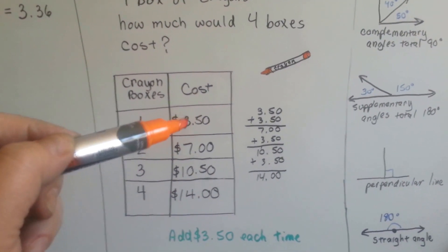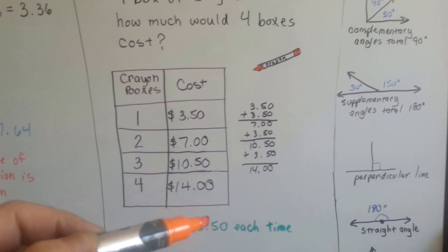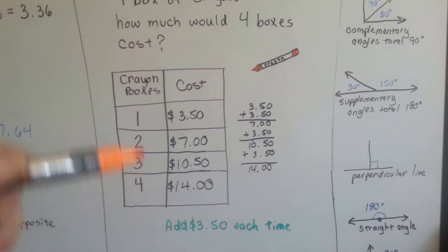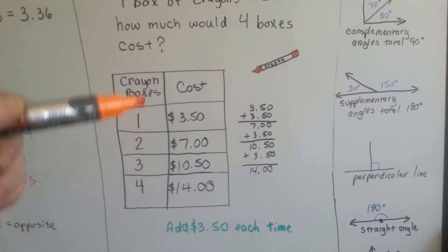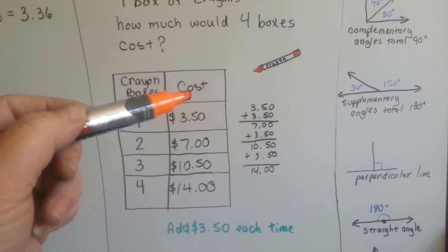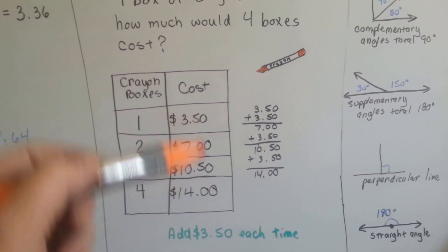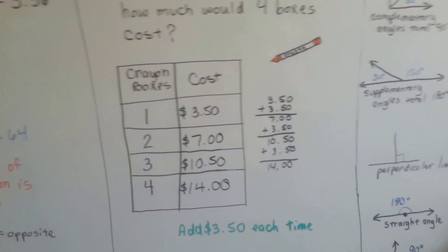We could keep adding $3.50 and make a table to show that four boxes would be $14. We would increase by $3.50 each time and have the terms coming down the side here of 1, 2, 3, 4 to show us the number of boxes, and then we would know because we made a table.